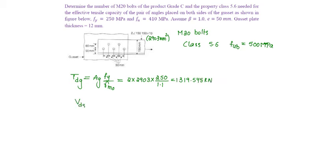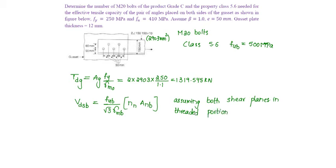Design shear capacity of the bolt will be equal to FUB by root 3 into gamma Mb into net area into number of planes in the net area. Assuming both shear planes in threaded portion, design shear capacity will be 500 by root 3 into 1.25 into 2 into net area of the bolt is pi by 4 into 20 square into 0.78, so this will be equal to 113.178 kilonewtons.